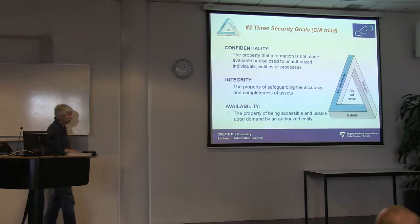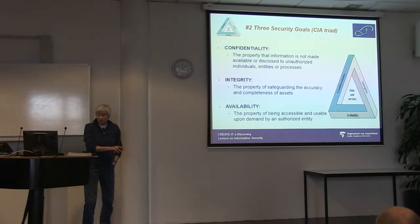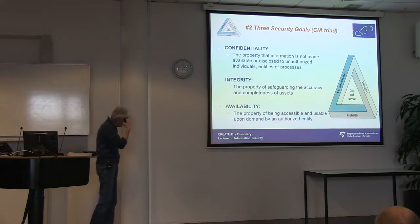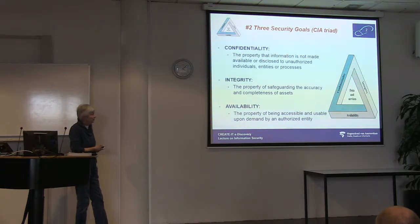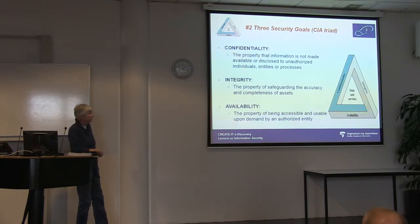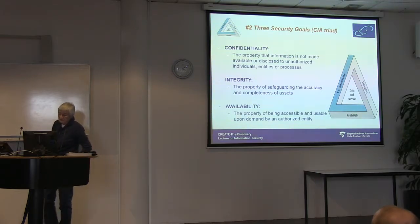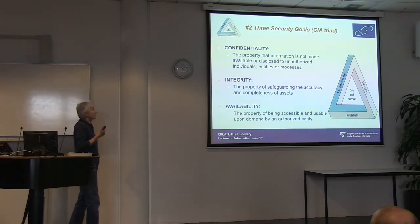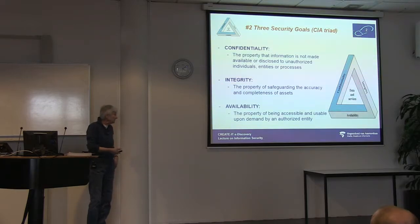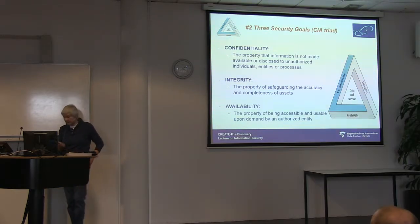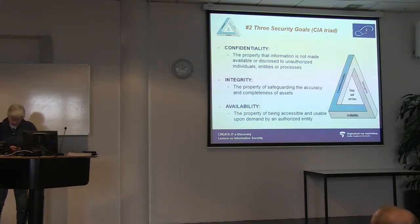Here we have the CIA again. It is very important to ensure CIA not only of your data and information but also of all the services related to that data. Confidentiality: information is not made available or disclosed to unauthorized individuals, entities, or processes — disclosure is a very important word. Integrity: the accuracy and completeness of information. Availability: being accessible and usable upon demand — not by anyone, only by an authorized entity.